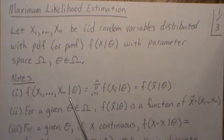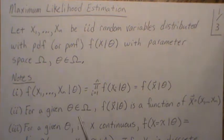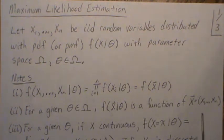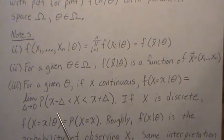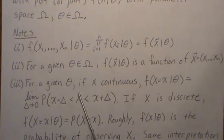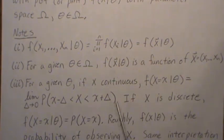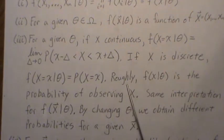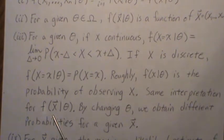The joint PMF or PDF, since each observation is independent, is the product of the marginals, which we write in vector form as F of X for a given theta in omega. If X is continuous, F of X given theta can be thought of as the limit of the probability in a neighborhood of X as that neighborhood shrinks to zero. If it's discrete, it's just the actual probability. So roughly, F of X is the probability of observing X.